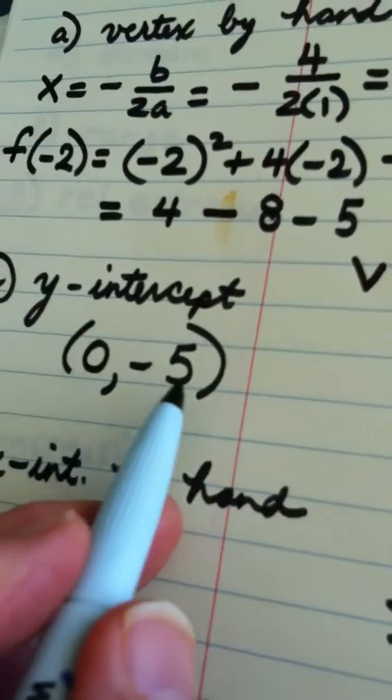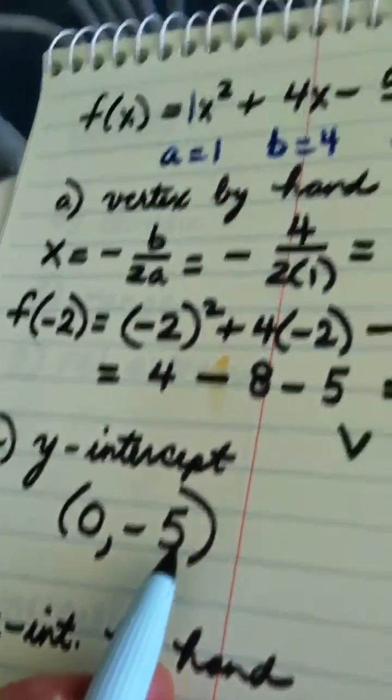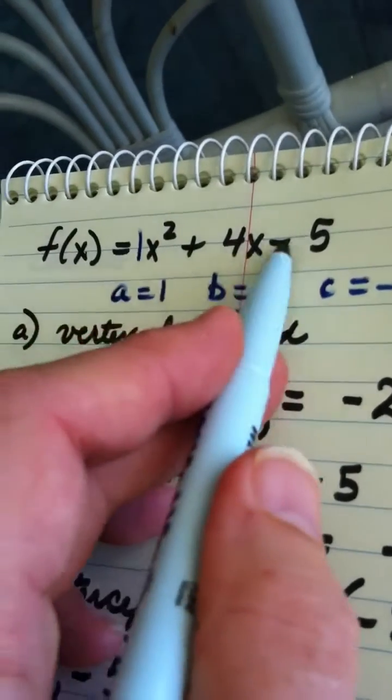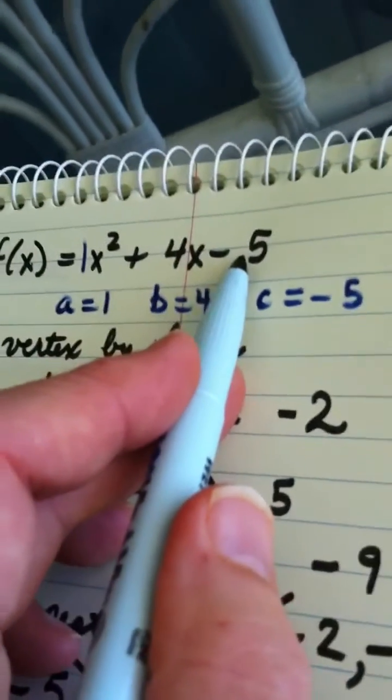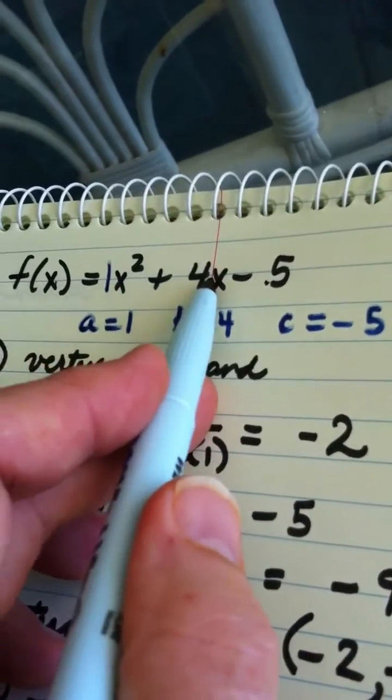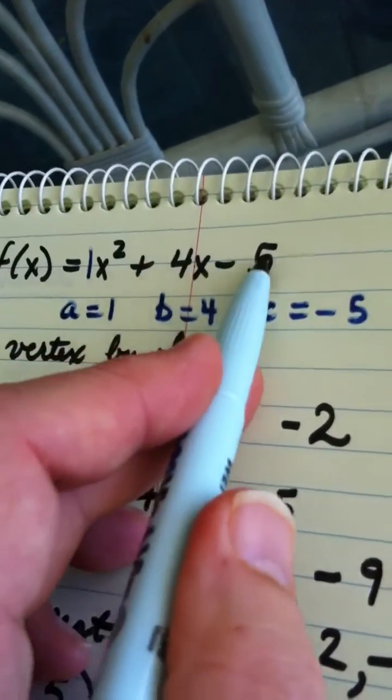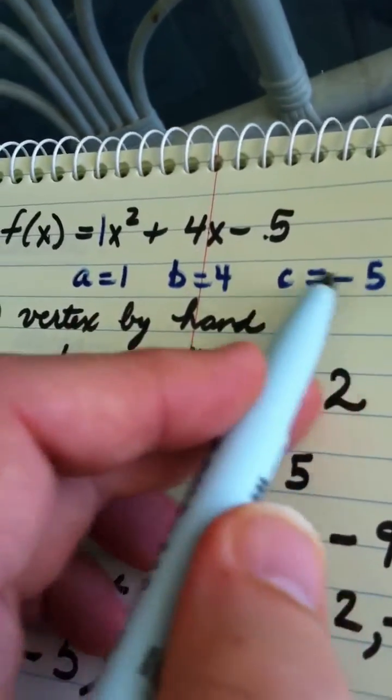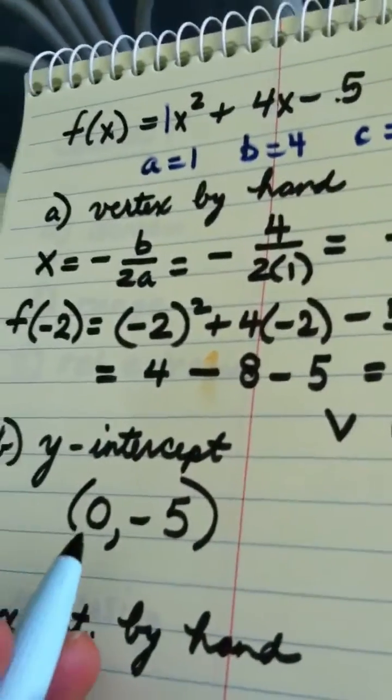My y-intercept is the ordered pair 0 negative 5. Now remember, easy to find because when a function's written in this form ax squared plus bx plus c, to find the y-intercept you let x be 0. Well if these disappear, this becomes the y-intercept, so you can always tell that by looking at c.